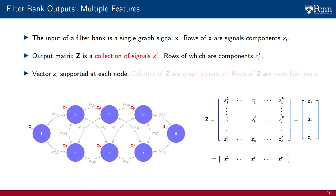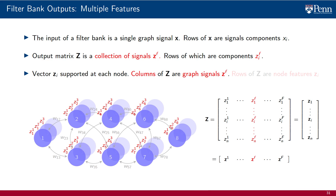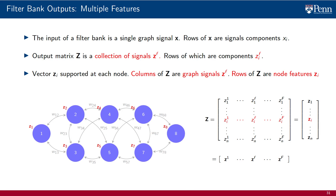We obtain a vector z_i supported at each node. There are therefore two ways of reading the matrix graph signal Z. Different columns of Z are graph signals z^f — they are different pages of the book, indexed by lowercase f, and there are uppercase F of them. Rows of Z are node features: vectors z_i associated with individual nodes, read across pages of the book. There are N of them, one per node.